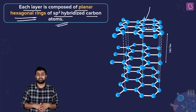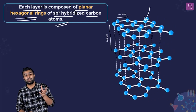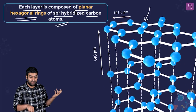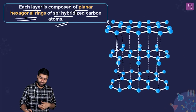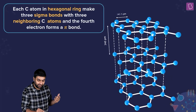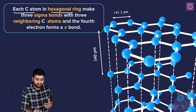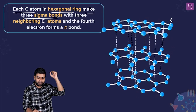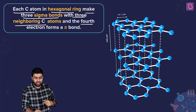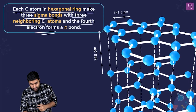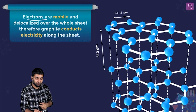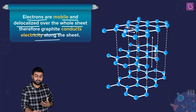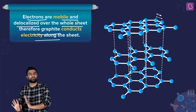The electrons are delocalized — a frequent term once you start organic chemistry. Each carbon atom in the hexagonal ring makes three sigma bonds with three neighboring carbon atoms, and the fourth electron forms a pi bond. These electrons are mobile and delocalized over the whole sheet, and therefore graphite conducts electricity along the sheet.